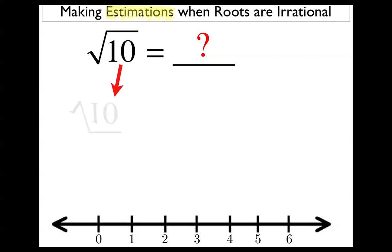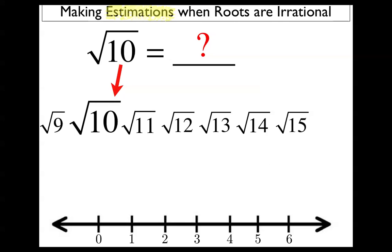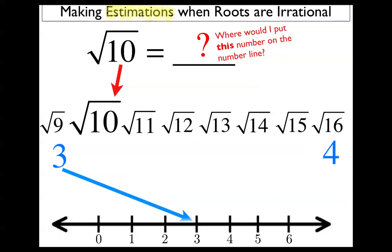An estimation doesn't have to be perfect. So, let's compare the square root of 10 to something that's slightly smaller, like the square root of 9, or maybe something that's slightly larger, like the square root of 11. Okay, the problem is, I know what the square root of 9 is, but I don't know what the square root of 11 is, or 12, or 13, or 14, or 15. Oh, wait. I do know what the square root of 16 is. It's 4. And I know what the square root of 9 is, it's 3. Okay, so where would I put the square root of 10 on the number line? Well, it would have to be between those numbers, wouldn't it? Since the square root of 10 is between the square root of 9 and the square root of 16, I'm going to have to go somewhere between 3 and 4 on the number line.